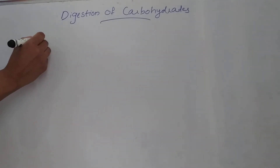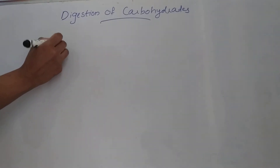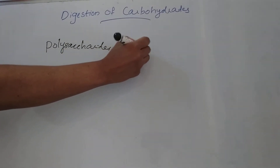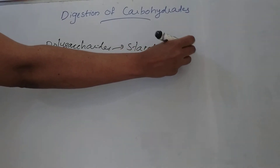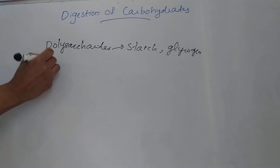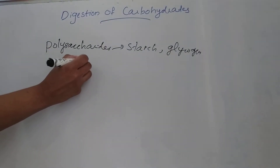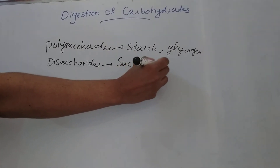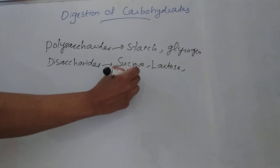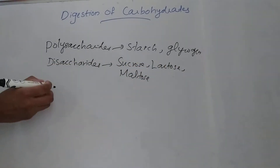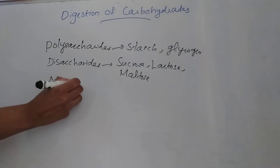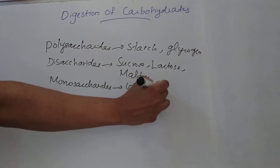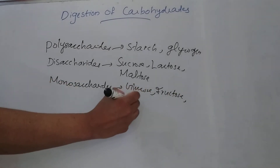Dietary carbohydrates principally consist of polysaccharides like starch and glycogen, then disaccharides like sucrose, lactose and maltose, and in small amounts monosaccharides like glucose, fructose, and pentoses.